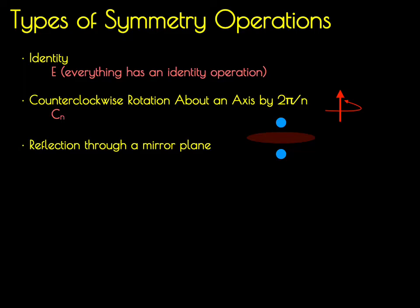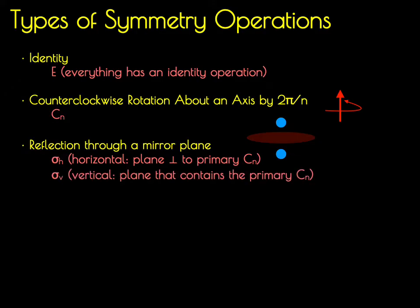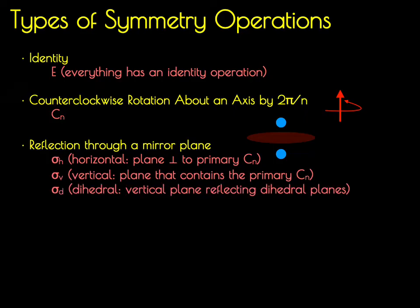A third type of symmetry operation is a reflection through a mirror plane. There are three types of mirror planes that depend on how that plane is oriented relative to different rotational axes within the molecule. If the mirror plane is perpendicular to the primary Cn rotational axis, it's called a sigma h for a horizontal mirror plane. If it contains the primary Cn rotational axis, it's called a sigma v for a vertical mirror plane. If it's a vertical mirror plane that reflects a dihedral plane, we call it a sigma d for a dihedral mirror plane.